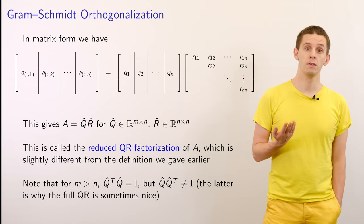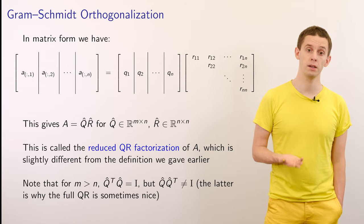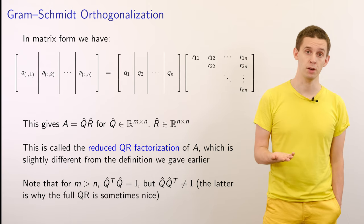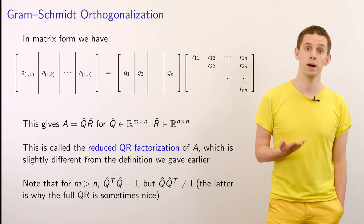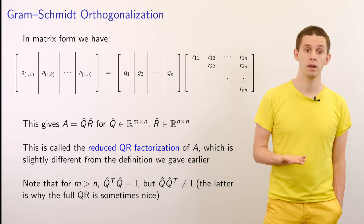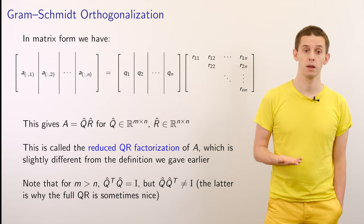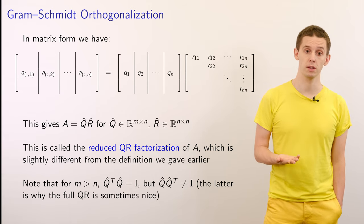This gives us that our matrix A can be written as Q̂ multiplied by R̂, where Q̂ is an m by n matrix and R̂ is an n by n matrix. This is referred to as the reduced QR factorization, which is slightly different from the definition given previously.